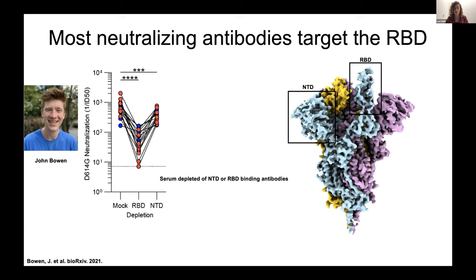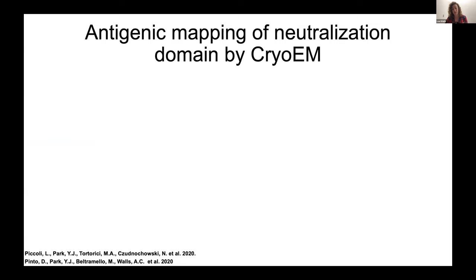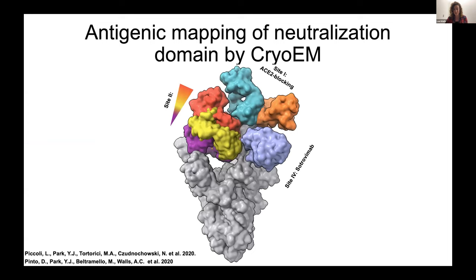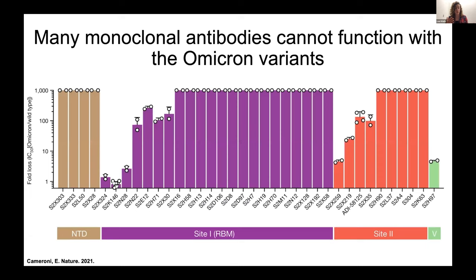However, when we take the exact same sera and remove all antibodies capable of binding to the receptor binding domain or RBD, we see a dramatic loss of neutralization. This suggests that many of the neutralizing antibodies are actually targeting the receptor binding domain, and not many are targeting the N-terminal domain. That really got us thinking about the contribution of receptor binding domain-targeting antibodies in terms of vaccine design and therapeutics. We used cryo-electron microscopy in collaboration with Veer Biotech to isolate monoclonal antibodies from people who had been infected with SARS coronavirus or who had been vaccinated, and were able to generate an antigenic map through structure — identifying where these antibodies were binding specifically on the receptor binding domain.